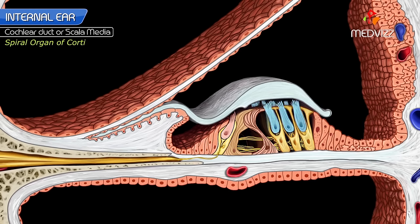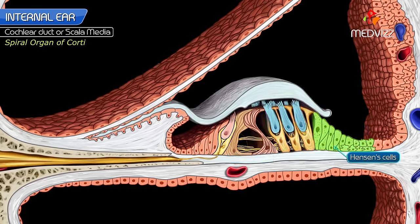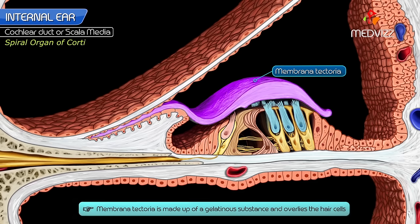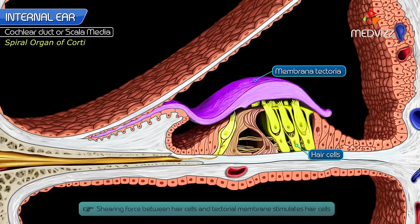The Deiters cells are situated between the outer hair cells and provide support to the latter. The Hensen cells lie outside the hair cells. The membrana tectoria is made up of a gelatinous substance and overlies the hair cells; medially it is attached to the osseous spiral lamina. The shearing force between the hair cells and the tectorial membrane stimulates the hair cells.